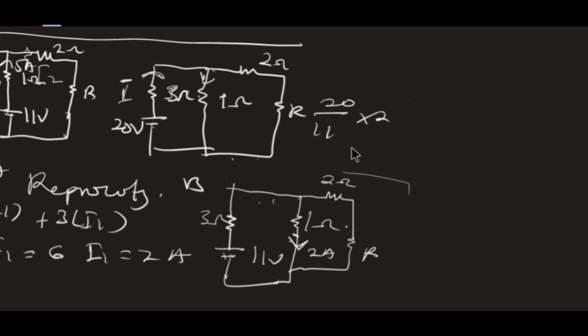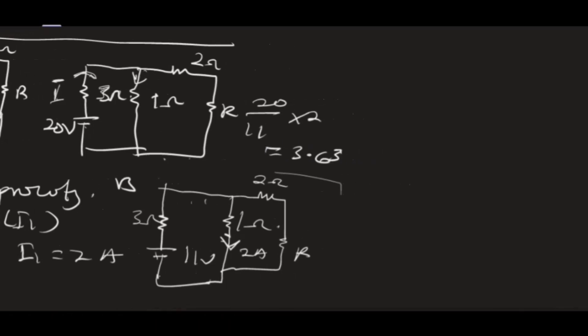The answer is 3.636 amperes, and that is obtained using the reciprocity theorem. The circuit given will not be touched, but you'll be given an additional circuit which you change to look like what you have, then use proportion to solve. That's the end of this video — thank you for joining me, please subscribe to support, and don't forget to share.